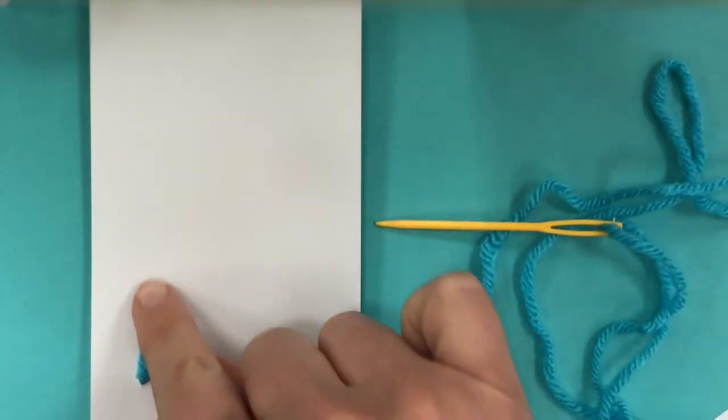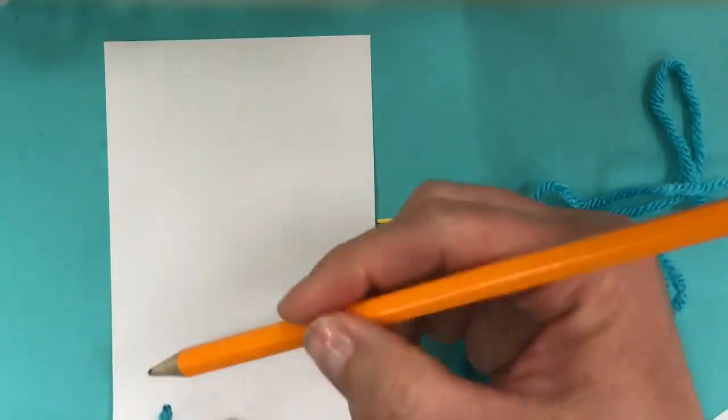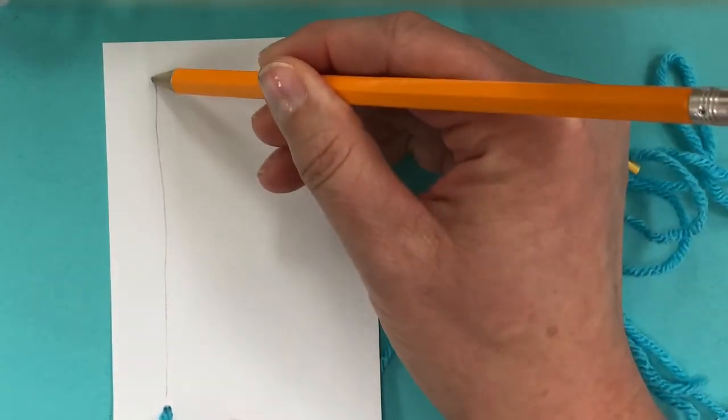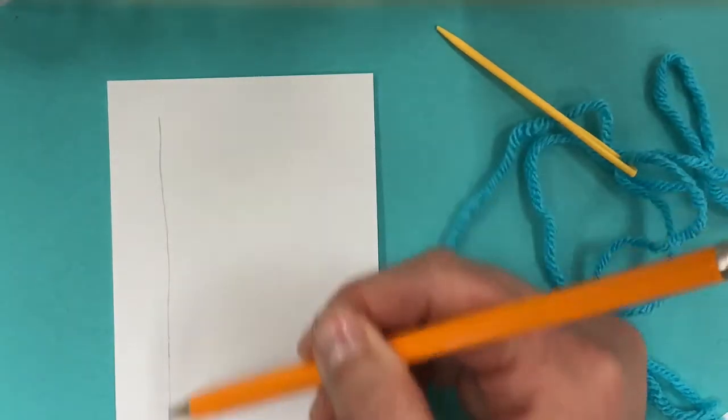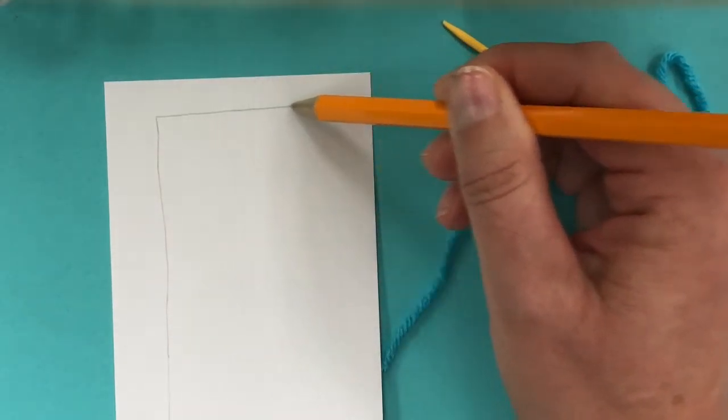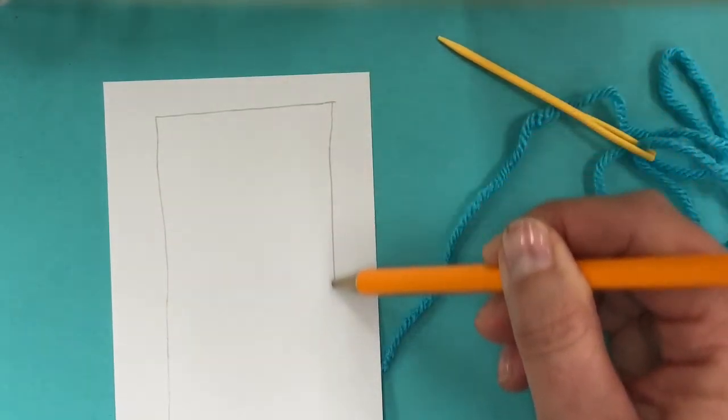And if it's helpful, if it's hard for you to visualize a straight line that you would sew, you can take your pencil and you can give yourself a little path to sew. Maybe going up and then over and then back down.